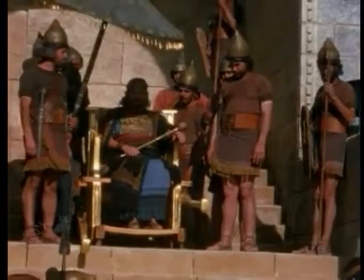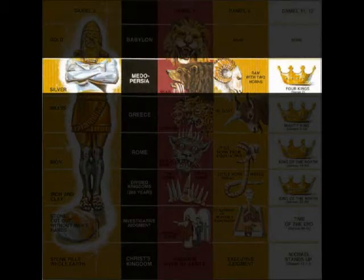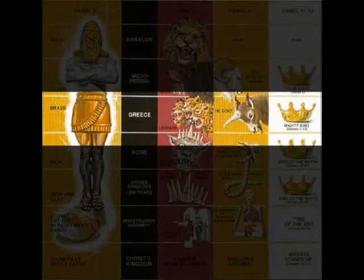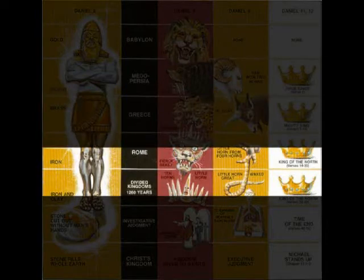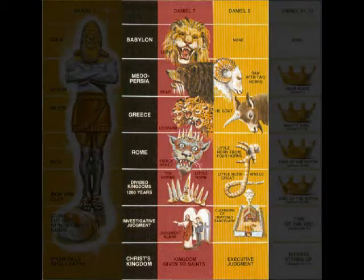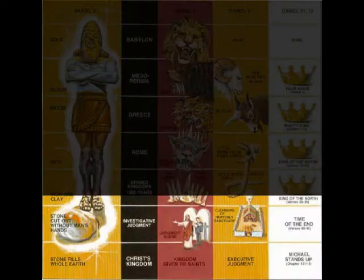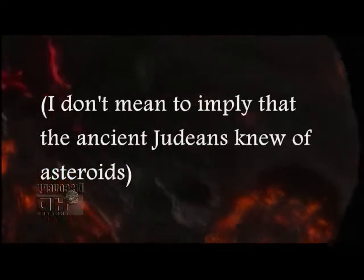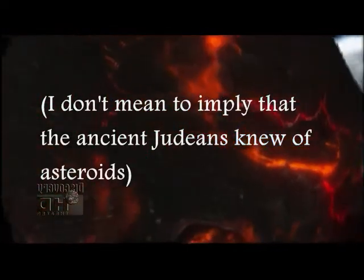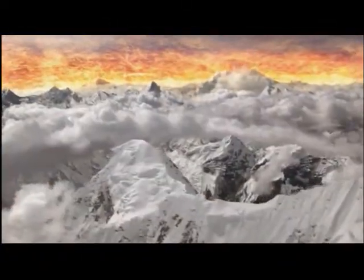In chapter 2, Nebuchadnezzar has a dream of a huge statue. It has a head of gold, a torso and arms of silver, the belly and thighs are of bronze, the legs are of iron, and the feet are of mixed iron and clay. In a moment we're going to see another symbolic dream that uses animals to represent the same things represented here by the metals. Then a great stone, uncut by human hands, flies from heaven and smashes the clay feet of the statue — the statue crumbles — and this stone becomes a mountain that fills all the earth.